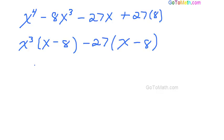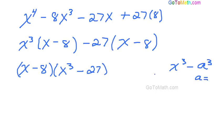Now what we can do is factor out this x minus 8. And we're left with x^3 minus 27. So once again, we have a difference of two cubes, x^3 minus a^3. And so a in this particular case is going to be 3. 3 cubed is 27.